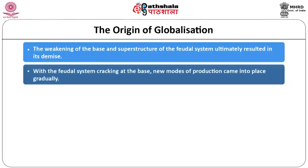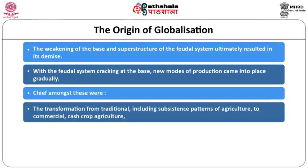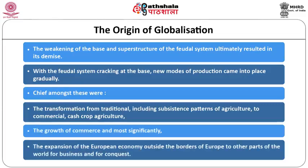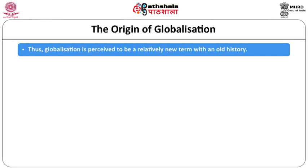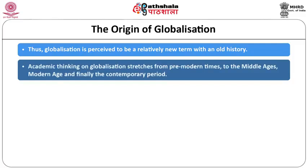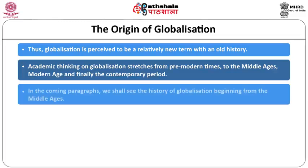The weakening of feudalism's base and superstructure ultimately resulted in its demise. New modes of production came into place — transformation from subsistence agriculture to commercial cash crop agriculture, the growth of commerce, and most significantly, the expansion of the European economy outside Europe to other parts of the world for business and conquest. Globalization is thus a relatively new term but with an old history, stretching from pre-modern times to the middle ages, modern age, and the contemporary period.